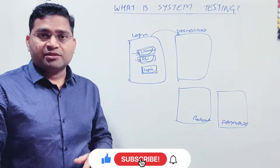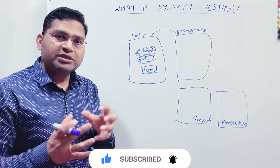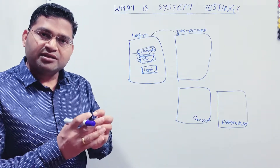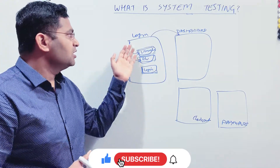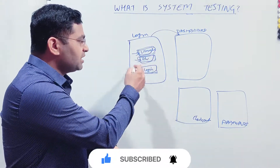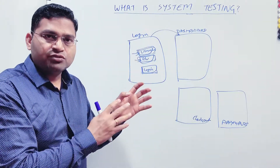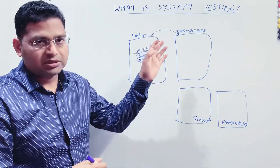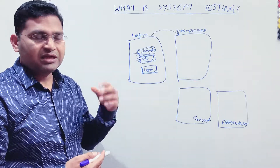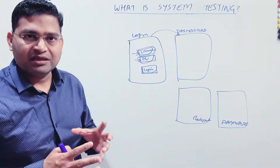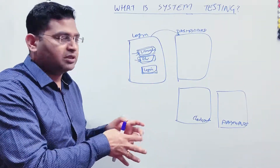Coming back to system testing — as we understood in integration testing, when you are integrating multiple units together and testing those integrated units, that is integration testing. For example, with a login page, you have units: username, password, and login button. When you test these as a whole with a valid username and password, click login, and get redirected to the dashboard, or get an error message for invalid credentials — that is integration testing. A couple of units integrate and you test those integrated units.